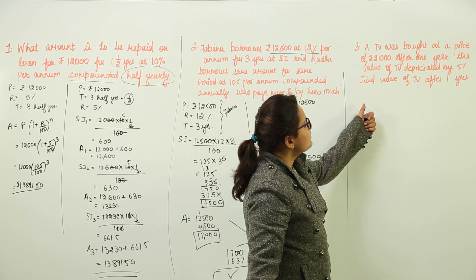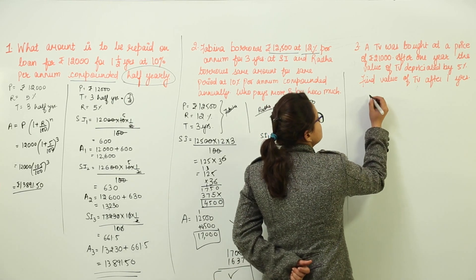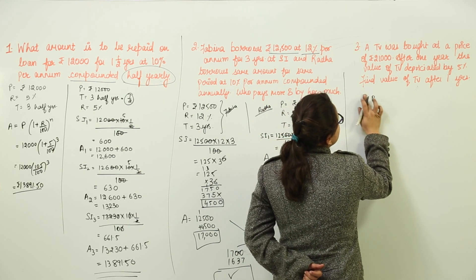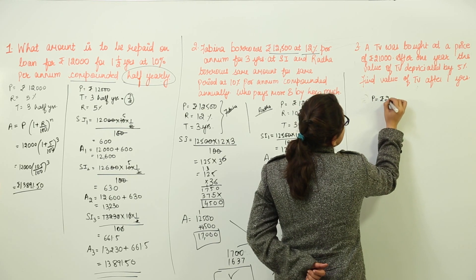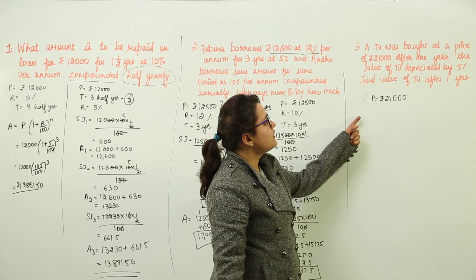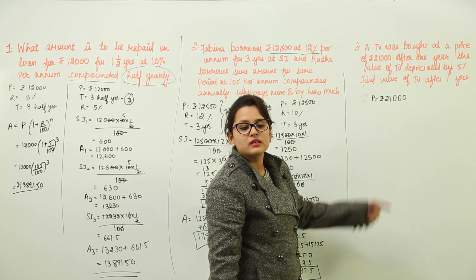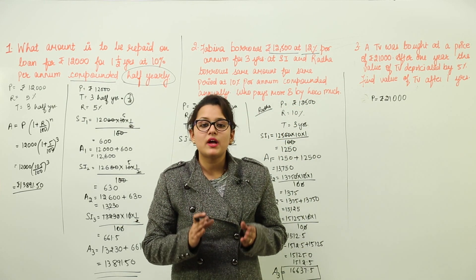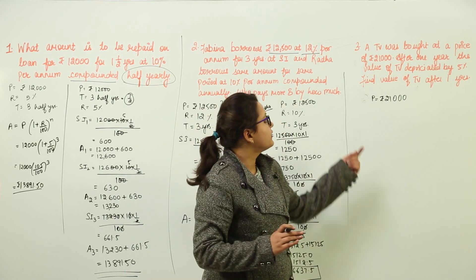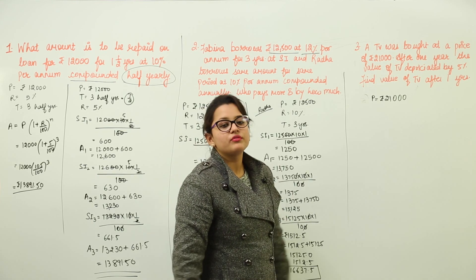It says, a TV was bought at a price of Rs. 21,000. We can write the cost price or the principal price as Rs. 21,000. After 1 year, the value of TV depreciated by 5%. The depreciation term here means that the value is getting reduced by 5% after 1 year. Find the value of TV after 1 year.